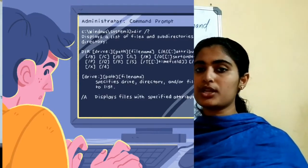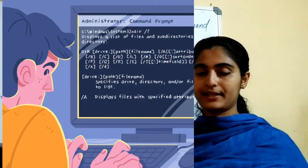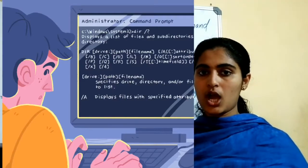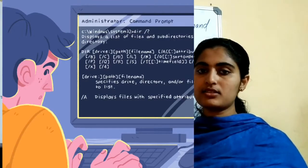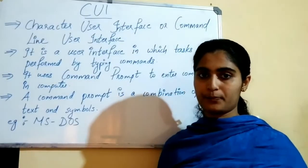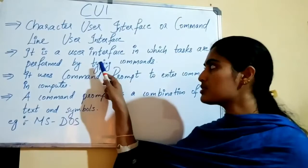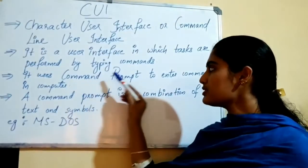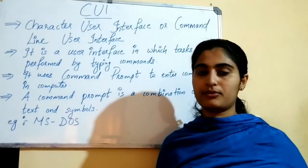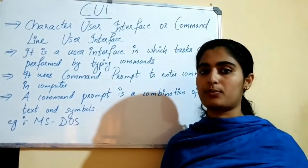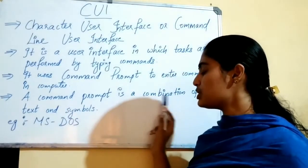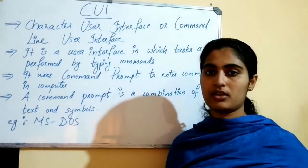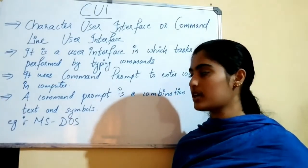For example, if you want to open a file, in a CUI there are no menus, no icons, toolbars, windows, or buttons. All you have is a black screen, and inside that black screen you type commands for doing any work. The computer uses a command prompt to enter commands — a command prompt is a combination of text and symbols. An example of CUI is MS-DOS.